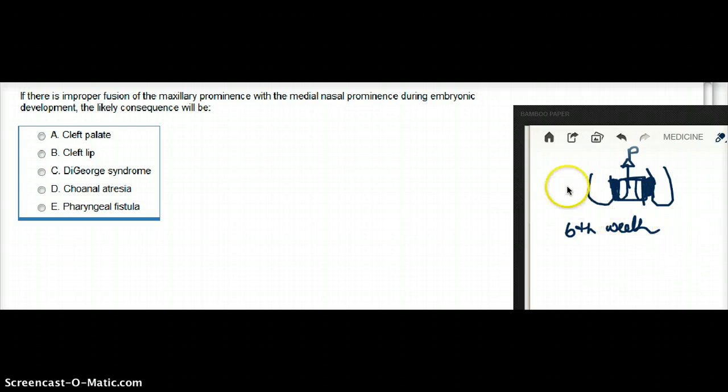The left and right maxillary prominences fuse with the midline intermaxillary segment to form the upper lip. If one of the maxillary prominences fails to fuse, then we have a unilateral cleft lip.